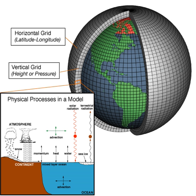Spectral models do not suffer from the pole convergence problem. Some experiments use geodesic grids and icosahedral grids, which, being more uniform, do not have pole problems. Another approach to solving the grid spacing problem is to deform a Cartesian cube such that it covers the surface of a sphere.